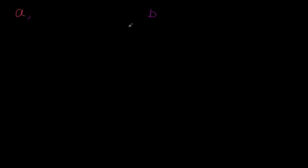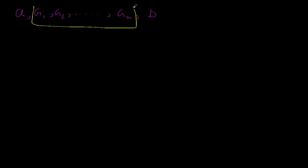Welcome everyone. Now that we have learned a few things about geometric progression, let's start to play with it. We ask a similar question to what we asked in the arithmetic progression chapter. We are given two numbers, let's say A and B. Can we insert any number of terms in between them — let's say G1, G2, and so on up to Gn — such that this will form a geometric progression? Let's find out the answer.